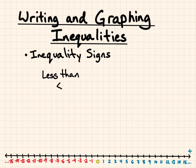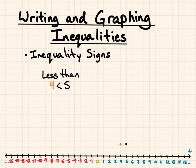First, the less than symbol. It says that the number on the left is less than the number on the right. For example, 4 is less than 5 — you can see that 4 is to the left of 5 on the number line. Another example: 3 is less than 4. It's always good to look at the number line to see which one is further to the left — that would be less — and which one is further to the right — that would be greater.